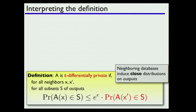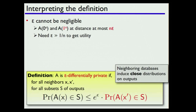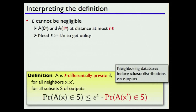What is this definition really telling us? Epsilon can't be too small. If I consider two data sets with Hamming distance n, by the triangle inequality, if my algorithm satisfies this definition, those two data sets will be at distance at most n times epsilon. If epsilon were cryptographically small, these two data sets would be indistinguishable — you'd learn nothing from them, making the mechanism totally useless. These are exactly the kinds of differences we want to be able to detect.